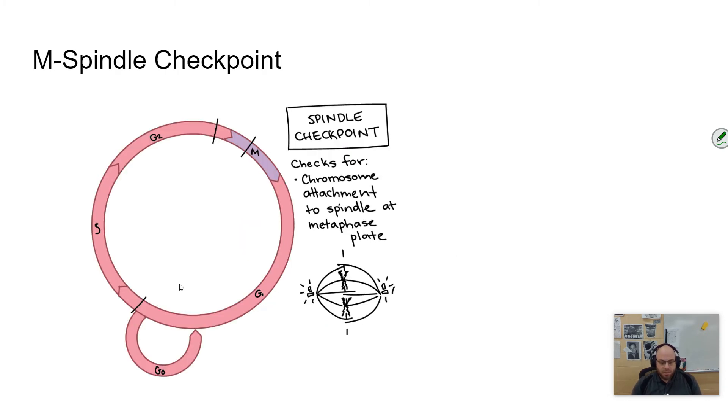Then there's the M spindle checkpoint. I've called this the anaphase checkpoint before—either name is fine. Basically, this checks that each chromosome is attached to a spindle at the centromere. At the metaphase plate, everything must be hooked up before the spindle fibers start to pull. It's like pulling a boat with a truck—you'd want to make sure the boat was hooked up before you started pulling, or you might damage the boat or truck. This checkpoint ensures everything is hooked up correctly to initiate the next step: separation of the sister chromatids.